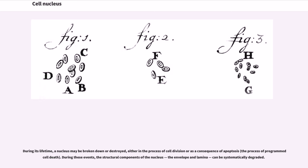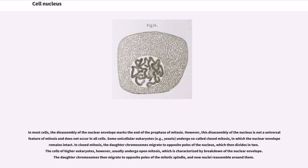During its lifetime, a nucleus may be broken down or destroyed, either in the process of cell division or as a consequence of apoptosis, the process of programmed cell death. During these events, the structural components of the nucleus, the envelope and lamina, can be systematically degraded. In most cells, the disassembly of the nuclear envelope marks the end of the prophase of mitosis. However, this disassembly of the nucleus is not a universal feature of mitosis and does not occur in all cells. Some unicellular eukaryotes, for example, yeasts, undergo so-called closed mitosis, in which the nuclear envelope remains intact. In closed mitosis, the daughter chromosomes migrate to opposite poles of the nucleus, which then divides in two. The cells of higher eukaryotes, however, usually undergo open mitosis, which is characterized by breakdown of the nuclear envelope. The daughter chromosomes then migrate to opposite poles of the mitotic spindle, and new nuclei reassemble around them.